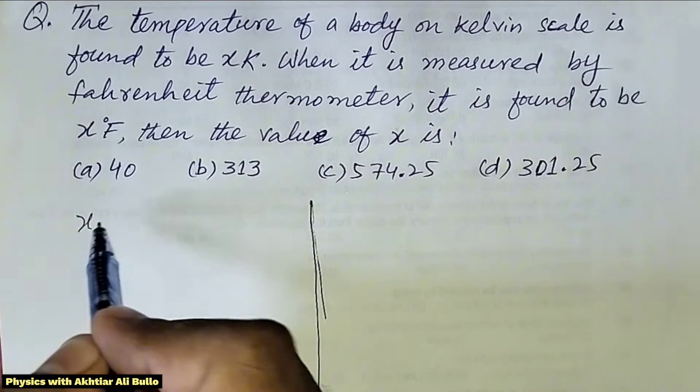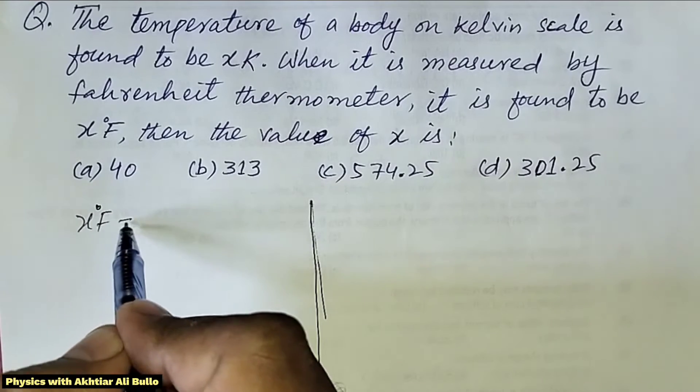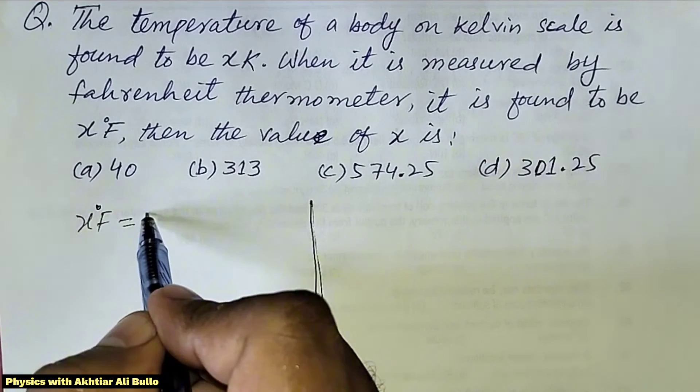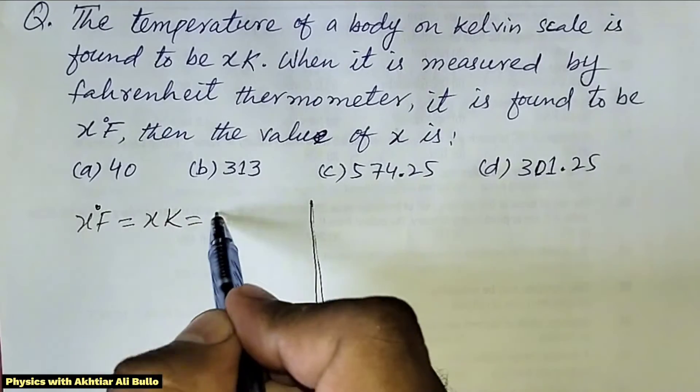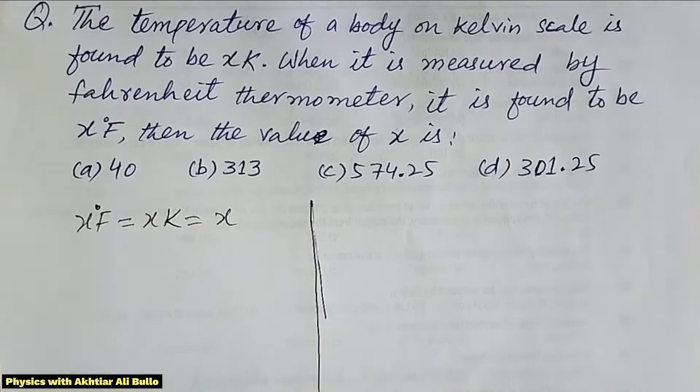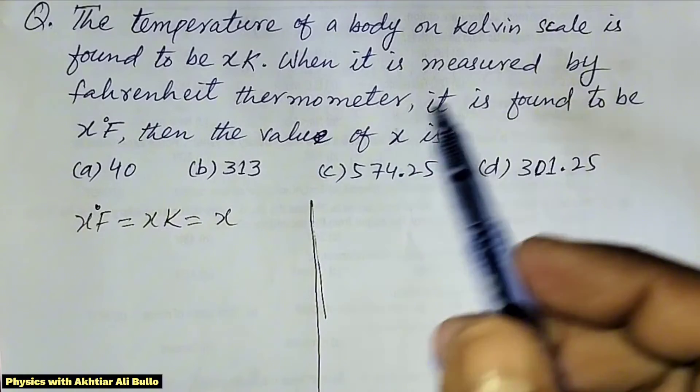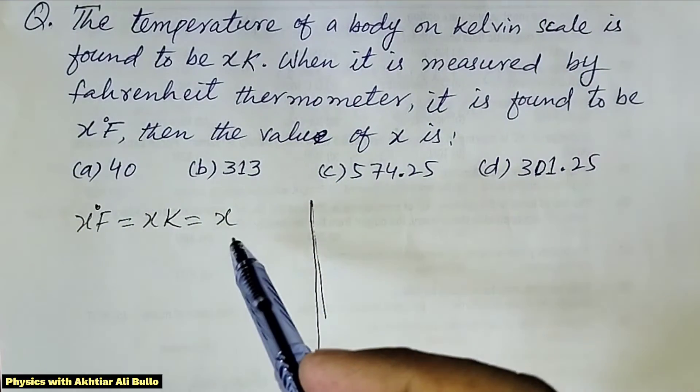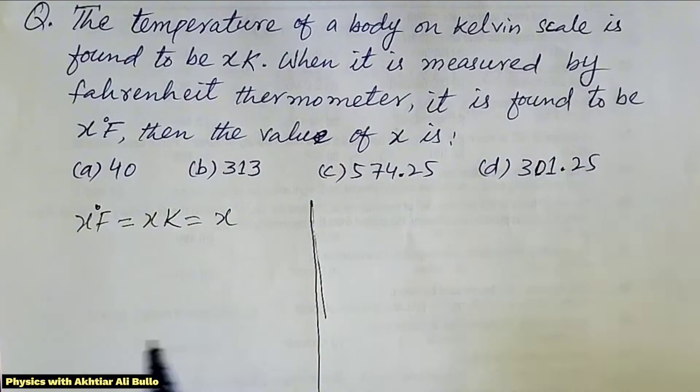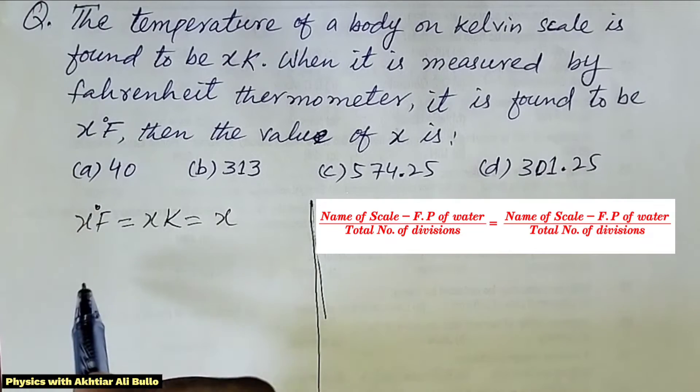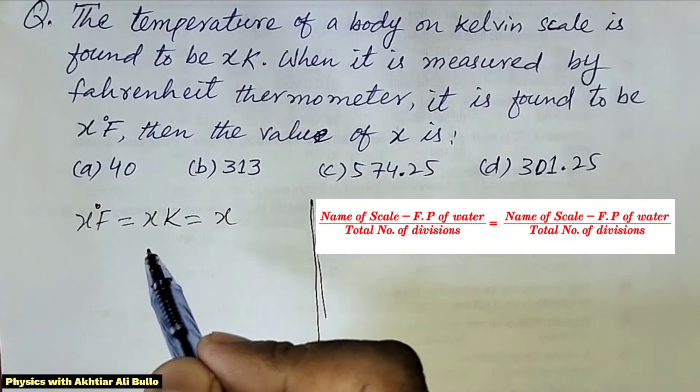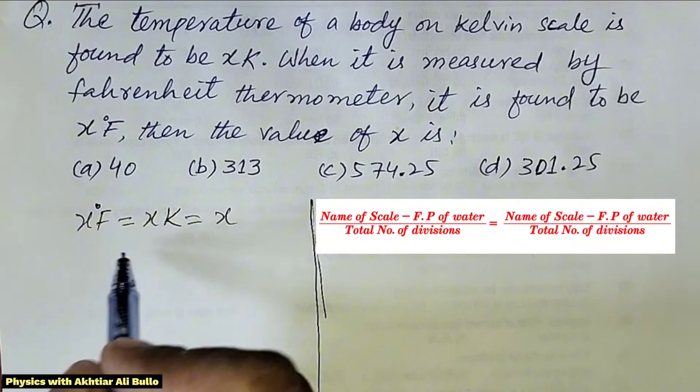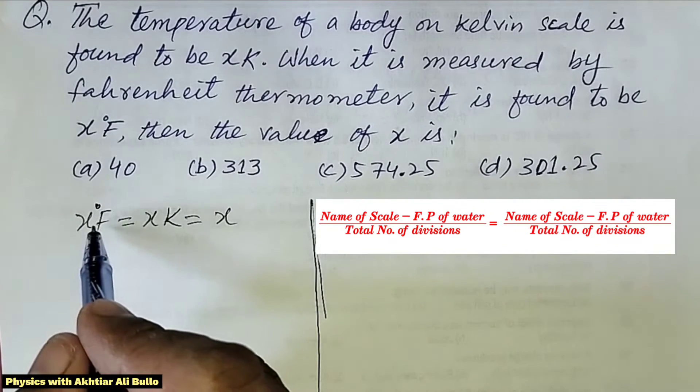The temperature x°F equals x K, which equals x. This means the temperature in both scales equals x. Using the formula: name of scale minus freezing point divided by total number of divisions.